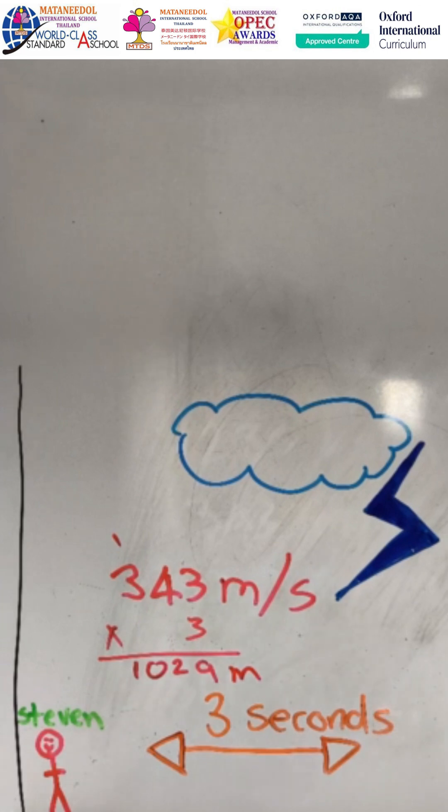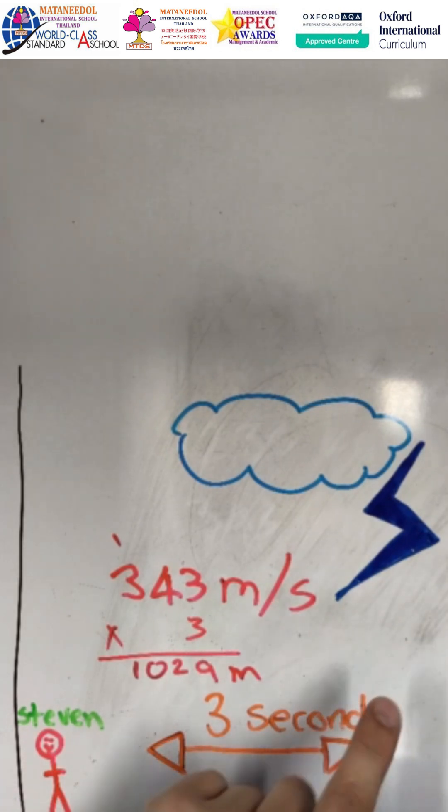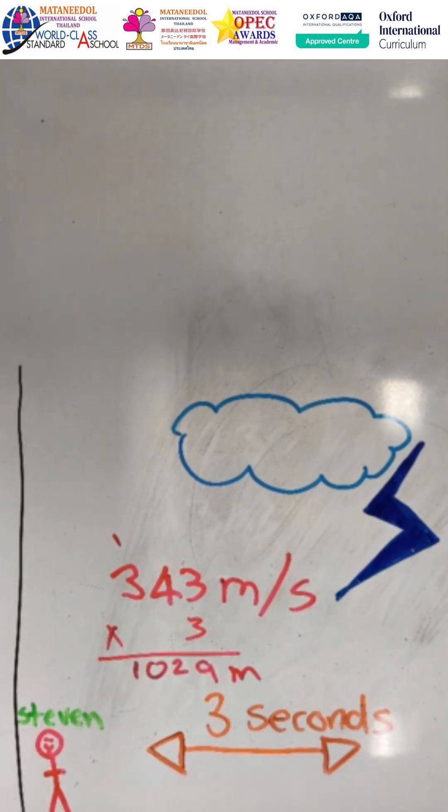So that means that Stephen is 1,029 meters away from the lightning storm because it took three seconds for him to hear the sound after he saw the light.